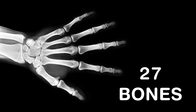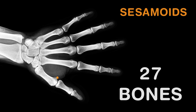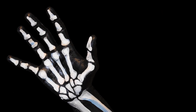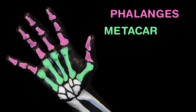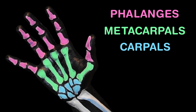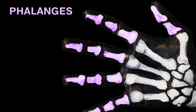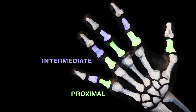The hand has 27 bones, but this count avoids bones embedded in the tendons called your sesamoids. These can be divided into three main groups: phalanges, metacarpals, carpals. With details now provided, phalanges are the finger bones and each hand has 14. Proximal, intermediate,